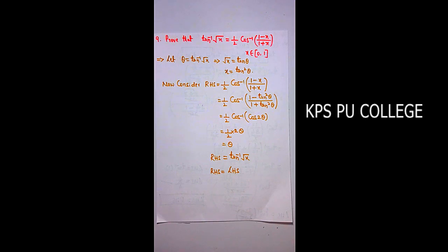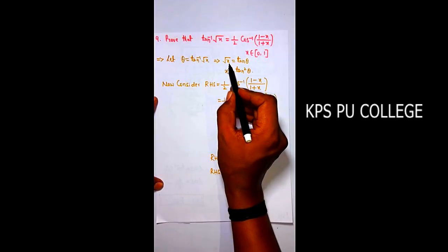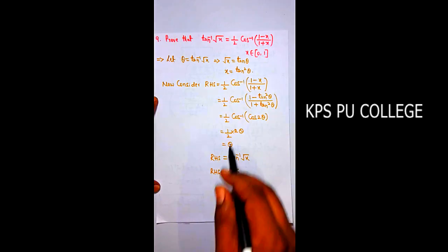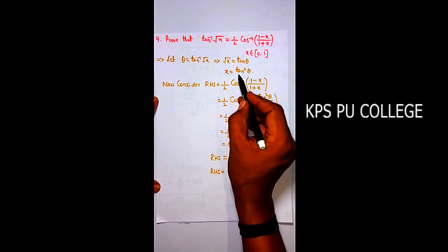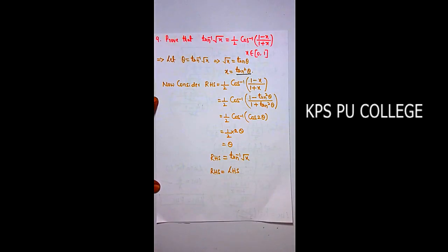Let θ = tan⁻¹(√x). Then √x = tan θ. Squaring both sides, x = tan²θ.